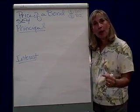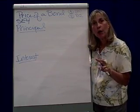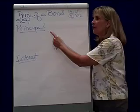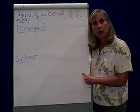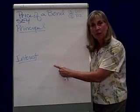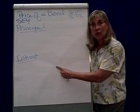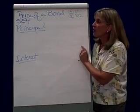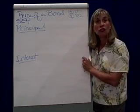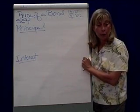As we figure out the price of a bond, remember there are two parts: I have to find the present value of the principal, and I have to find the present value of the interest. To show you this, we're going to do Short Exercise 4 in your book.